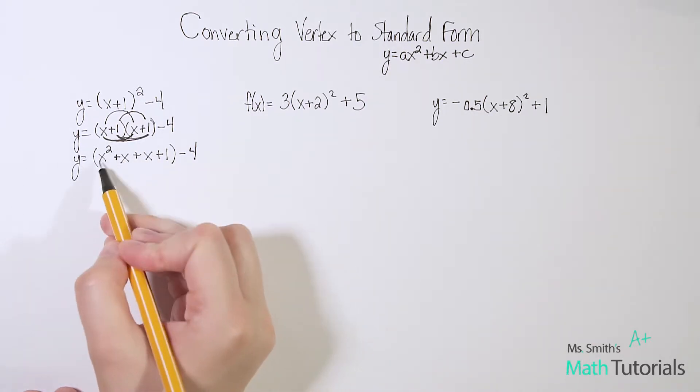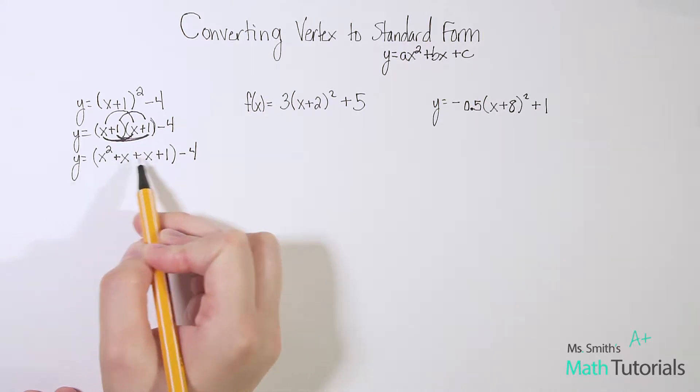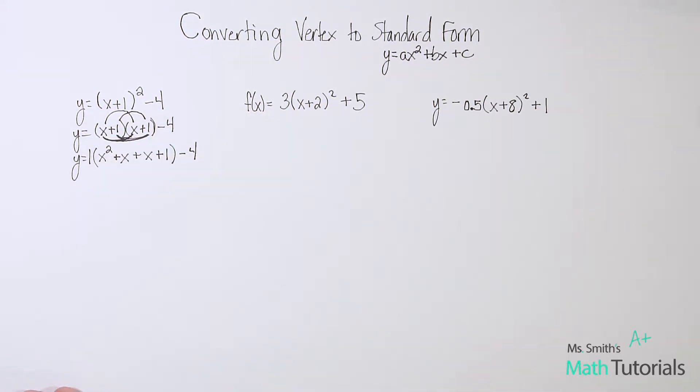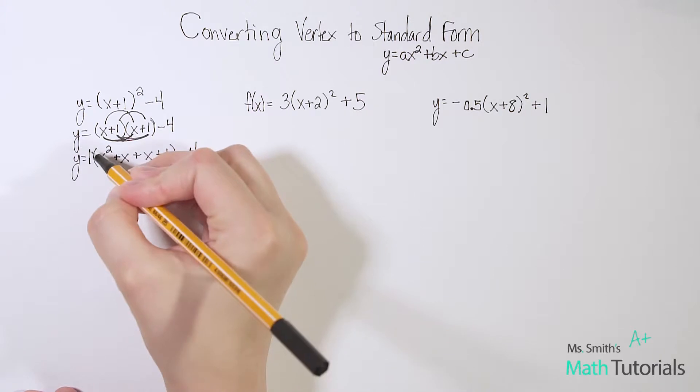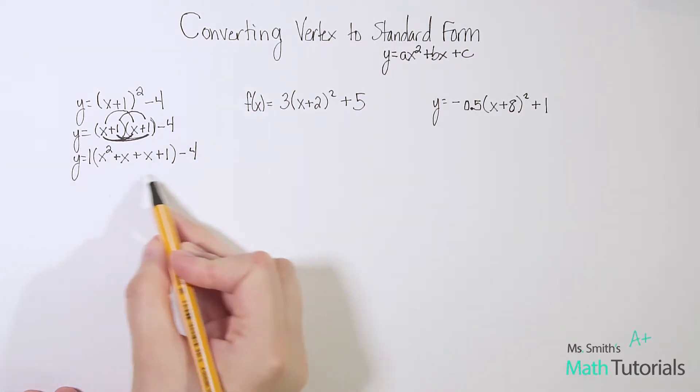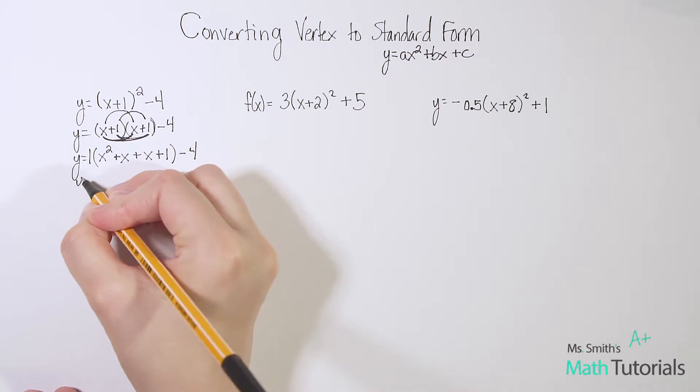Now I have to understand that technically out here in front of these parentheses is a positive 1. There's nothing there, so that means there's an understood positive 1. When there's a positive 1 here, I technically need to distribute that positive 1 throughout the whole parentheses set. Because it's a positive 1, we know it's not going to change anything. 1 times anything is just exactly what you start with. But I want to show you this step because that number is not always going to be 1.